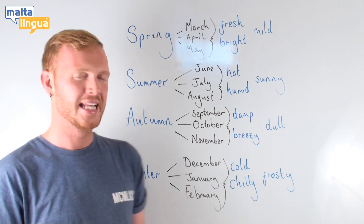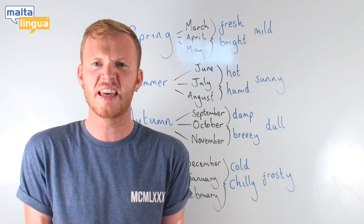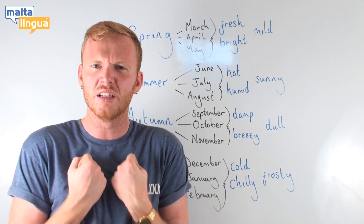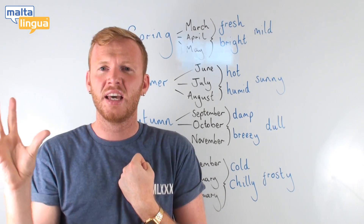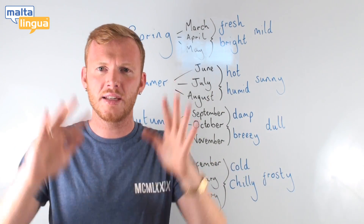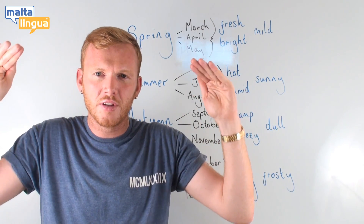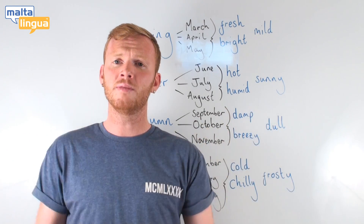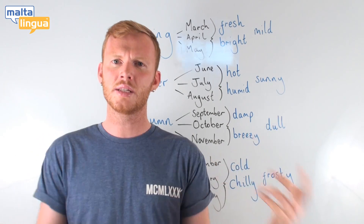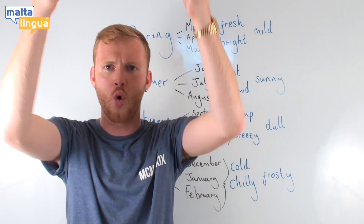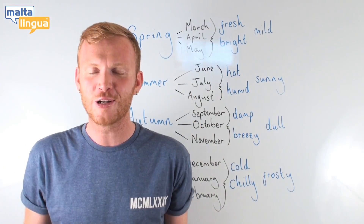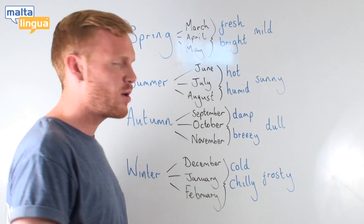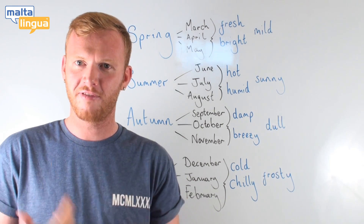'Damp' refers to water in the air — it's cold and the air feels wet. 'Dull' — those bright summer lights are disappearing and the light feels low; there is not much light. 'Breezy' refers to the wind — the wind is perhaps getting stronger in the autumn, and it's becoming breezy, another way of saying windy.